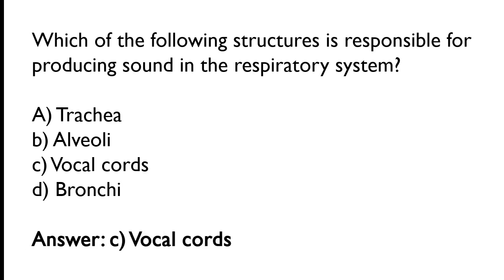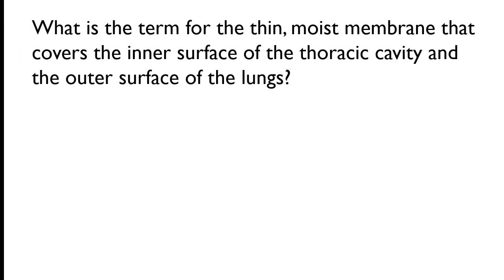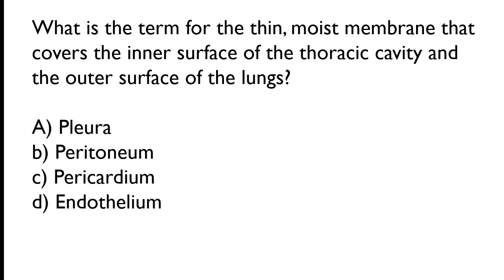The correct answer is option C: vocal cords. The vocal cords are the structure responsible for producing sound in the respiratory system. What is the term for the thin moist membrane that covers the inner surface of the thoracic cavity and the outer surface of the lungs? Pleura, peritoneum, pericardium, endothelium. The correct answer is option A: pleura.